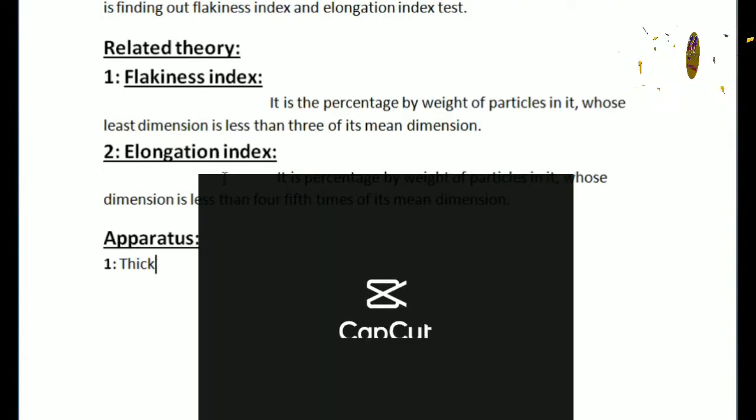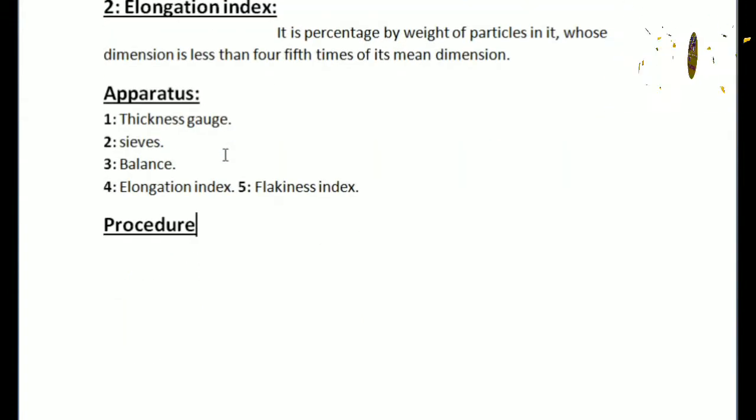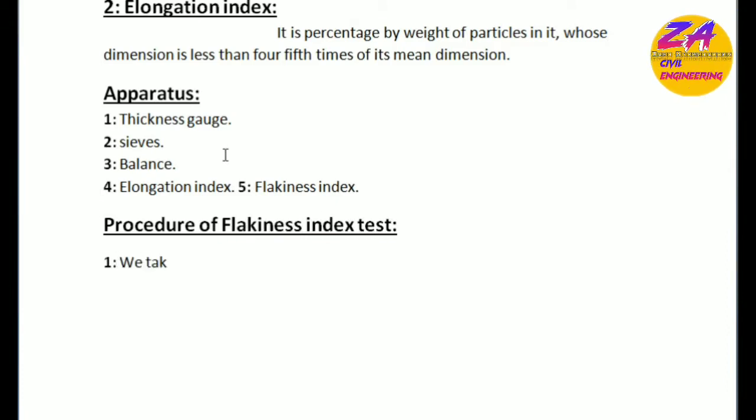So one by one we will discuss procedures. First one is thickness gauge and sieves, weighing balance, elongation index apparatus, flakiness index apparatus. Let's start our procedures that we have to adopt in this experiment: procedures of flakiness index test.